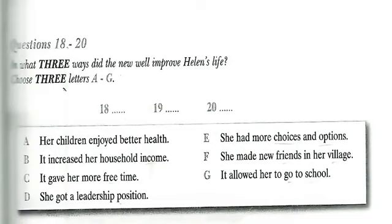I saw the shame in her eyes when she described how she would return from her long trek to find her two young children waiting for her. They were often sent home from school because their uniforms were dirty. With the new well in her village, her life was transformed. She now had choices, free time, options. Also, Helen had been chosen to be the water committee treasurer, collecting nominal fees from fifty-one households to use for the maintenance of their well. Water committees are often the first time women are ever elected to leadership positions in villages. Last month, Helen was standing in line waiting for water. This month, she's standing up for her community, and now she is beautiful. That is the end of section two. You now have half a minute to check your answers.